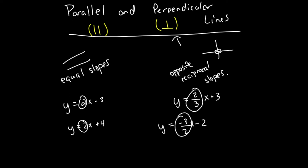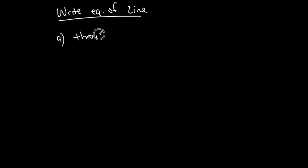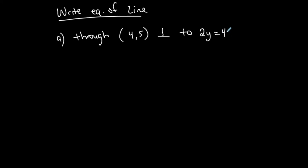You could be asked to find the equation of a line that is parallel or perpendicular to another. For example, part A: write the equation of the line through the point (4, 5), perpendicular to the equation 2y equals 4x minus 3. This given equation is not my line — it's a line that my line is perpendicular to. To write the equation of a line, you need a slope and a point. I have my point but not my slope yet.